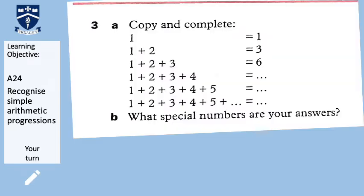There's a question on the screen — it says copy and complete. You have the first 3 done for you. Copy the first 3 with the answers and then complete the bottom 3. For part B, tell me what special numbers your answers are. Can you think of a link with what we have just looked at? Once you have done that, come back to the video.